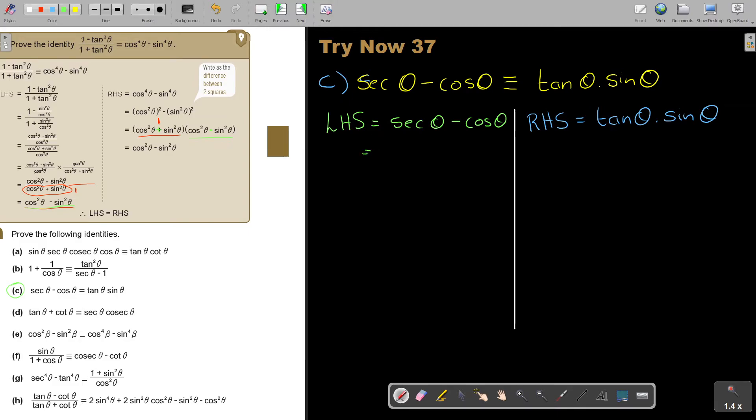So, sec, this one is going to be 1 over cos theta minus cos theta over 1. So, I multiply, I make the denominators the same. Multiply cos theta, multiply cos theta. I'm making the denominators the same. So, I get 1 minus cos square theta. Remember that we put the square there, not there, over cos theta.